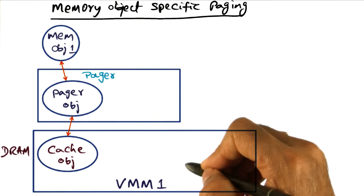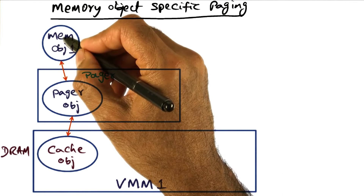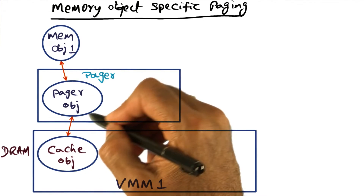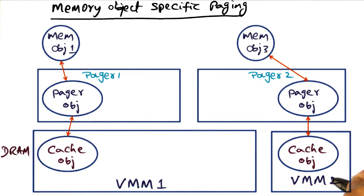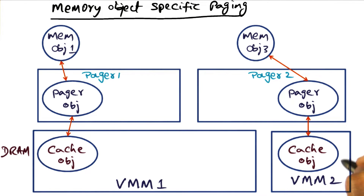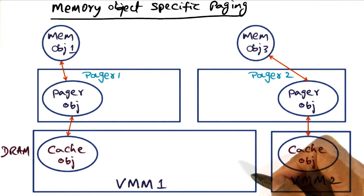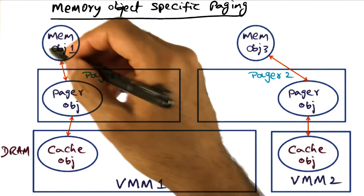Now the portion of the address space — that is, the region — that this virtual memory manager mapped to this memory object becomes available for the process to address in DRAM, because of the work done by the pager object in mapping this memory object into DRAM. Similarly, a different virtual memory manager object managing a different address space can also map another memory object and create a cached representation, mapping a region of its address space to that memory object using a pager object. The address space manager can make any number of such mappings between regions of the linear address space and memory objects.